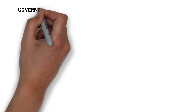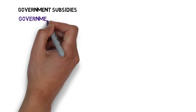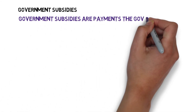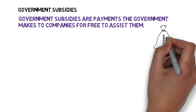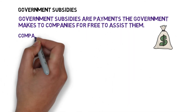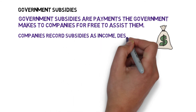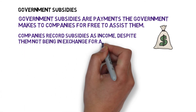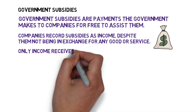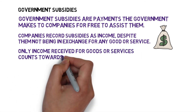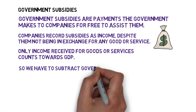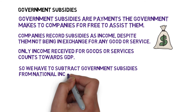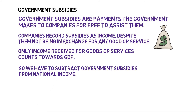The next technicality is government subsidies. Government subsidies are payments the government makes to companies for free to assist them. The thing is, companies record subsidies as income despite them not being in exchange for any good or service. But only income received for goods or services counts towards GDP, because GDP is a measure of the goods and services being produced. So we have to subtract government subsidies from national income in order for it to reflect gross domestic product.